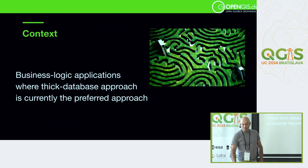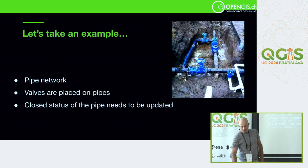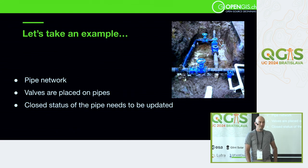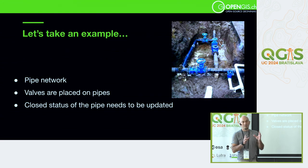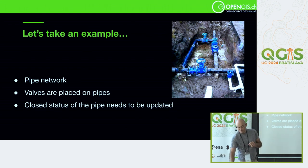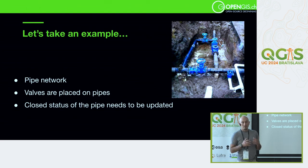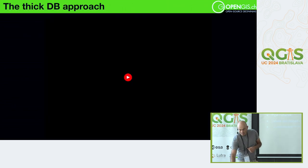I'll take a small example to illustrate the approach: a water network with pipes and valves. The idea is that if you have a valve on a pipe, closing the valve will close the pipe, and opening the valve will open the pipe. The close status of the pipe needs to be updated depending on the valve — that's the small piece of business logic I need to implement.